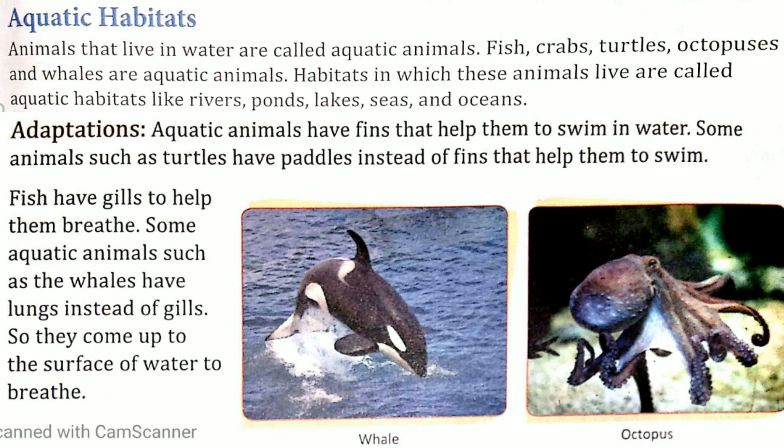Fish breathe through gills, jiske help se woh pani mein dissolve oxygen le paati hain. Some aquatic animals such as whales have lungs instead of gills. Kuch aquatic animals jaise ki whale, in mein lungs paye jate hain, gills ki jagah pe in mein gills nahi paye jate. Ye lungs se breathe karti hain. Lungs means phephde, jaise ki insaan mein paye jate hain.